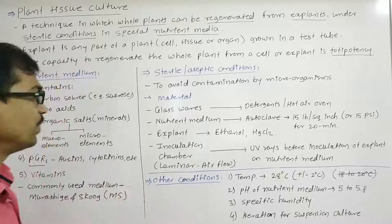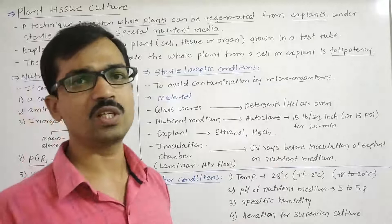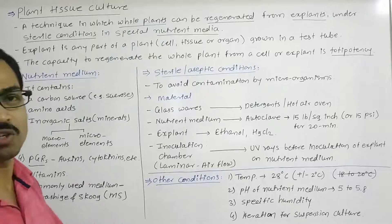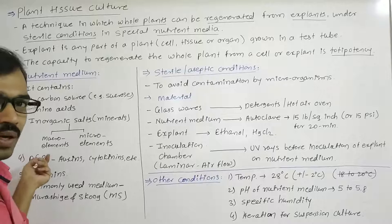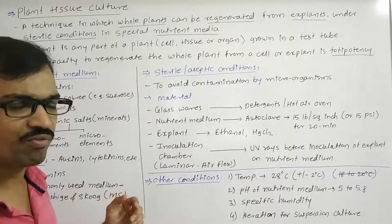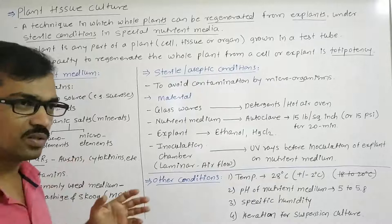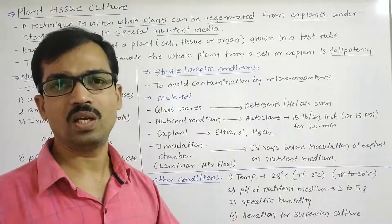Plants also require plant growth regulators — phytohormones — for proper differentiation of cells into tissues and organs and for performing physiological functions. Different phytohormones include auxins, cytokinins, ethylene, gibberellic acid, and abscisic acid. Generally, auxins and cytokinins are most commonly used in plant tissue culture; ethylene is used only in some specific applications.